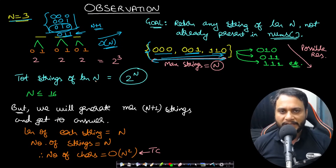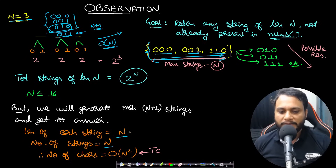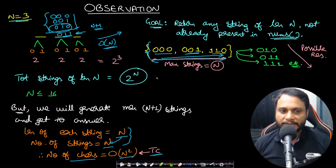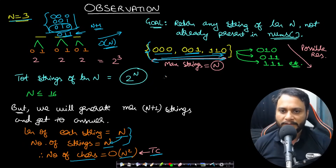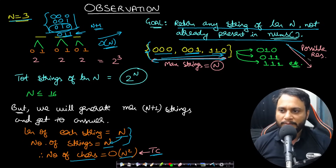How much time and space will it take? If you generate n strings and each string has length n, the total number of characters is order of n squared — number of strings times each string length. That is your time complexity, because when you write the recursion tree diagram each character is counted for one depth in the recursion. Your goal is to return any string of length n not already present in nums, and there will be multiple valid options.